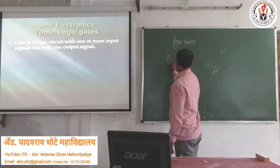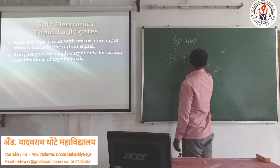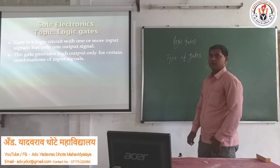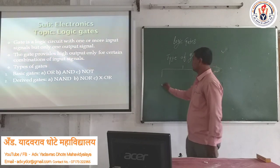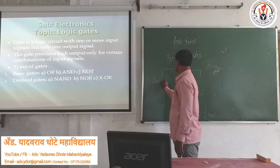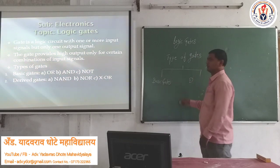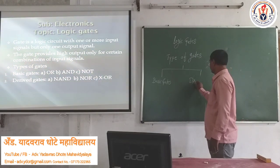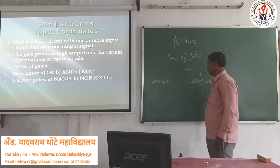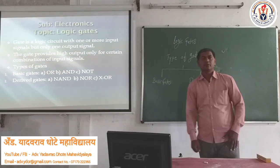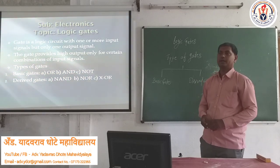There are three types of gates. The first is the basic gate, and the second is the derived gate. A derived gate is a combination of basic gates, that is why it is called a derived gate — it is formed by basic gates.